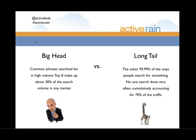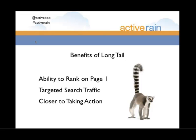The big head is really hard to rank for. It will be very challenging, especially as you're getting started, to rank on the first page for those big head terms. Who's there? Zillow, Realtor.com, Homes.com — those companies. Especially after Google's Panda, Penguin, and other updates, Google gives more exposure to brands. So for those big head terms in your market, you'll see Zillow, Trulia, Realtor.com. But on the long tail — that other ninety-nine percent — we actually have the ability to rank on page one if we do the right things.